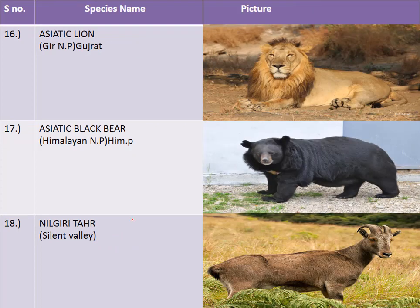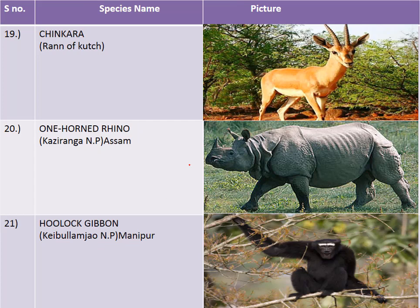The Asiatic lion is the key species of Gir National Park in Gujarat. The Asiatic black bear is native to the Great Himalayan National Park in Himachal Pradesh. The Nilgiri tahr is native to Silent Valley National Park in Kerala. The chinkara is a key species of Rann of Kutch. The one-horned rhinoceros belongs to Kaziranga National Park in Assam. The hollock gibbon is the key species of Keibul Lamjao — the only floating national park in the world — situated in Manipur.